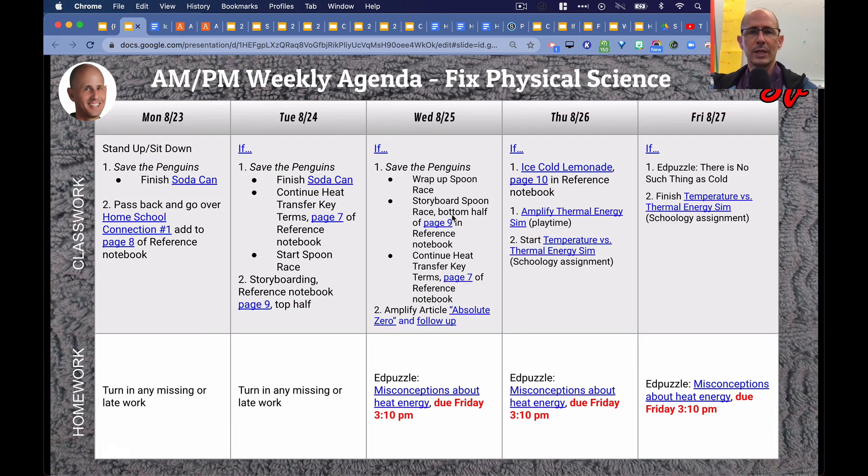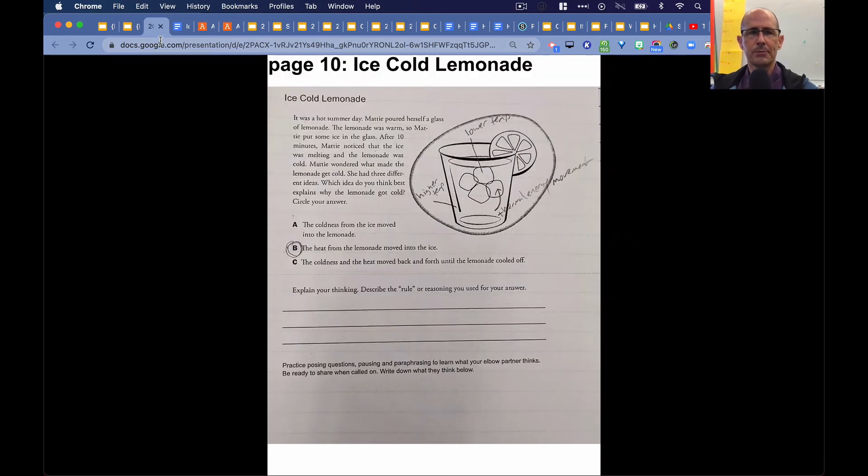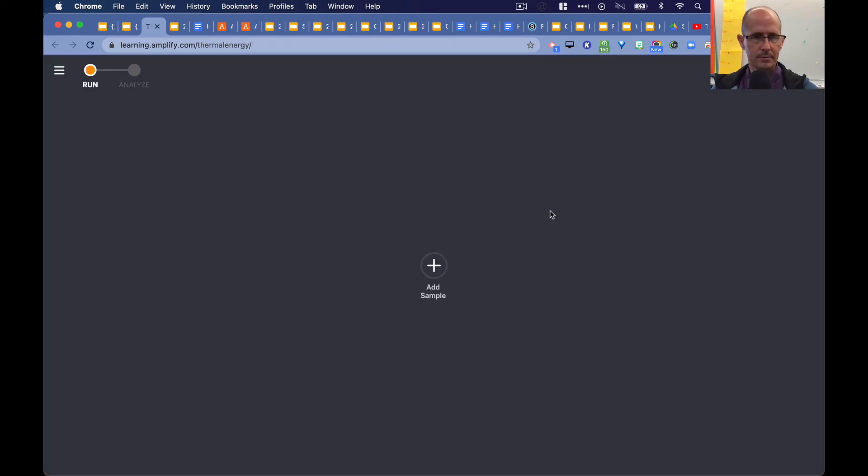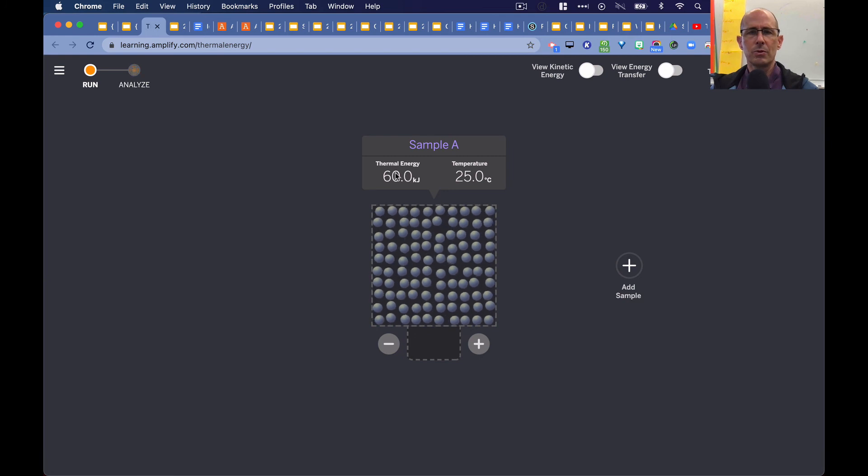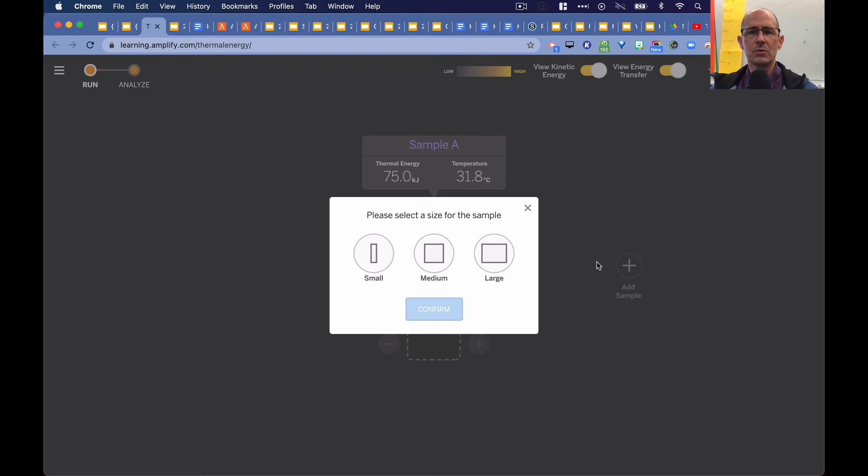And so we then place that into page 10 of the reference notebook. There it is all marked up. Then we played around with the Amplify Thermal Energy Sim. So the students had an opportunity to play around, see what features this Sim has, what it can do.